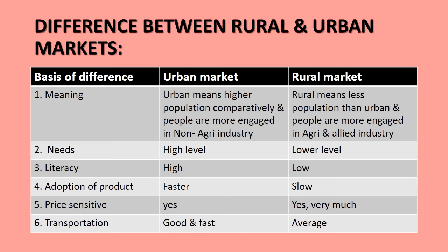Difference between rural and urban markets. To understand rural marketing more, we need to understand the differences between rural and urban markets. Urban market means higher population comparatively, and people are more engaged in non-agri industry. Whereas rural market means less population than urban, and people are more engaged in agriculture and light industry.